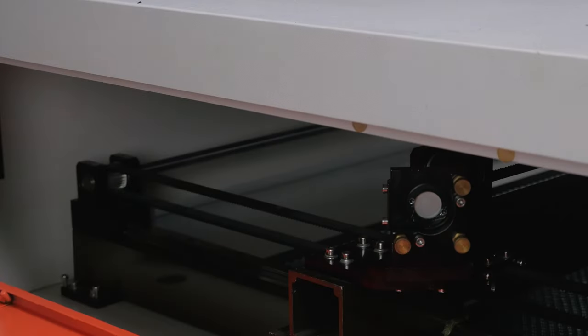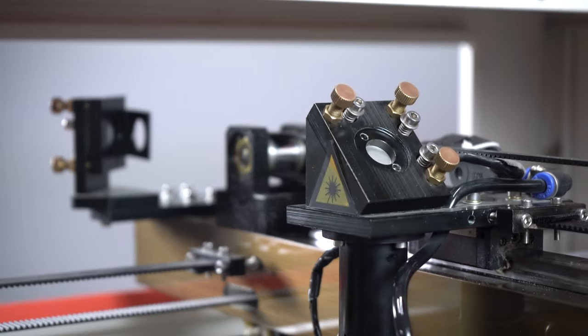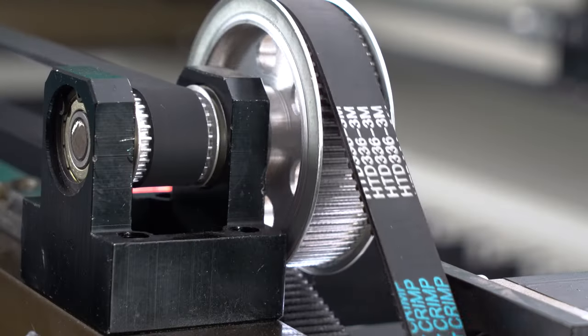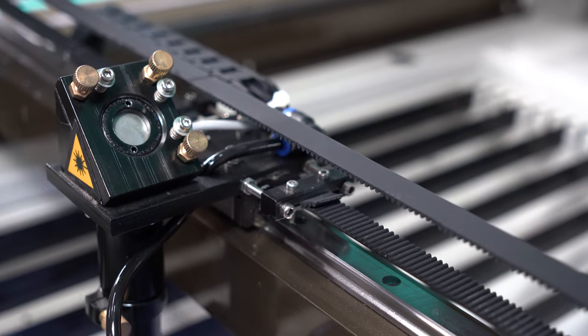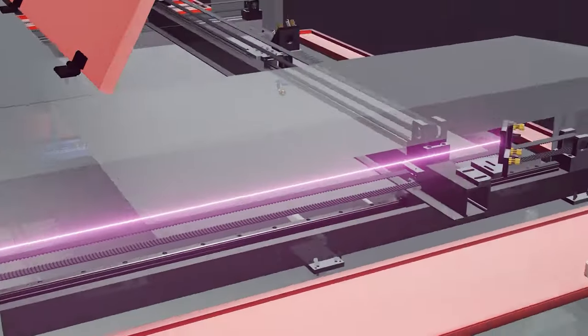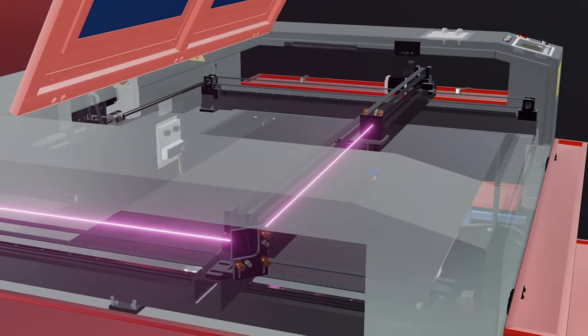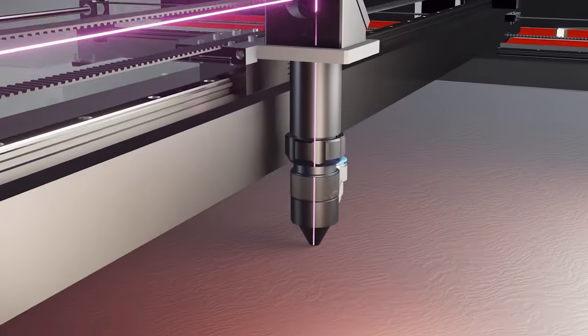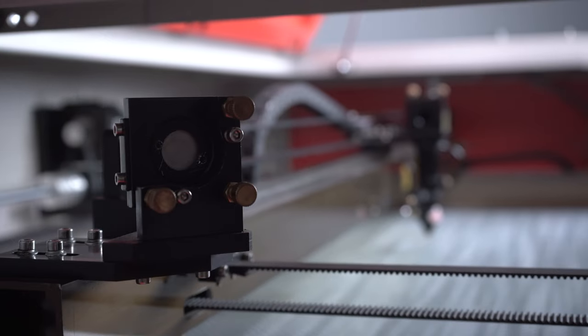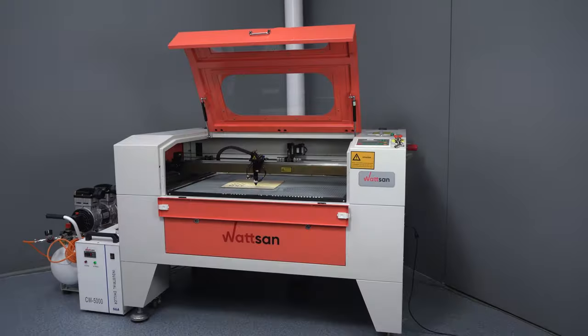CO2 laser machines are based on the flying optics principle. This means that they have a system of mirrors attached to different parts of the body, including moving parts. This system of mirrors reflects the laser beam and thus guides it from the laser source to the focusing lens and onto the material. The laser beam will inevitably scatter and lose some of its power. And the longer the distance the beam has to travel, the more power is lost.